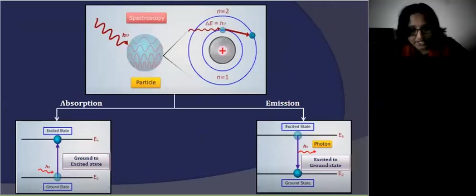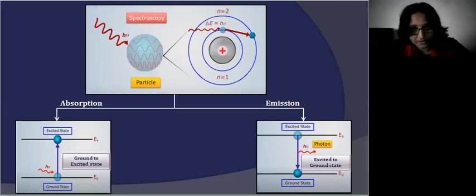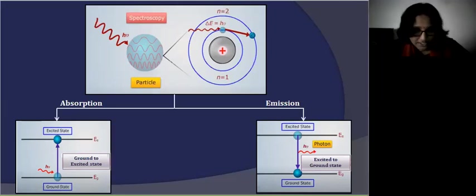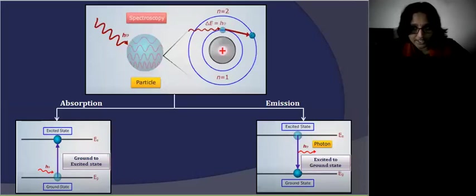There are two ways in which matter can interact with electromagnetic radiation: absorption and emission. In absorption spectroscopy, electrons present in the atom or molecule of a substance absorb energy from electromagnetic radiation and jump from the ground state to the excited state — that is, from a lower energy state to a higher energy state. This phenomenon is called absorption. In emission, if the electrons jump from the excited state to the ground state and release electromagnetic radiation, it is called emission.